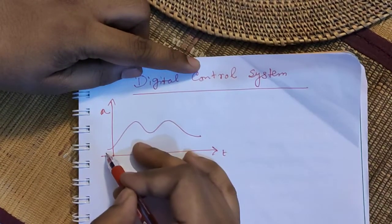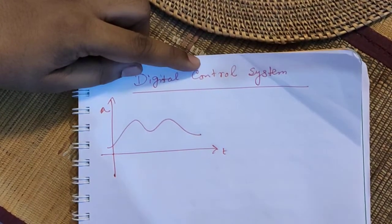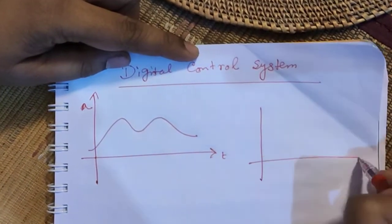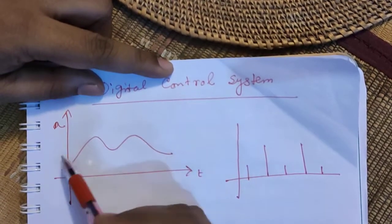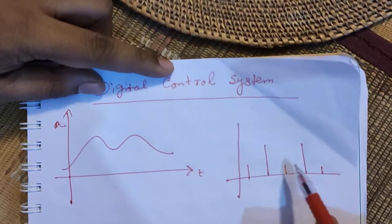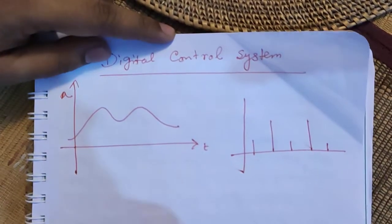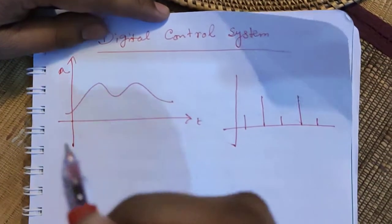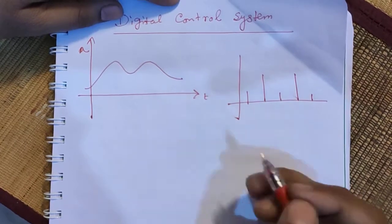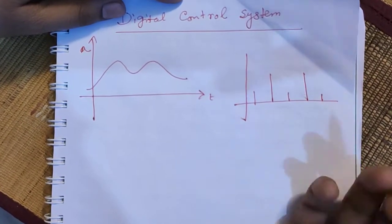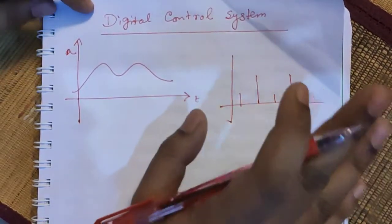But in a digital system, we won't have continuous data at every single point in time. Rather, we will have some discrete values of data, so we are missing out the data in between these values. The question is: what is a digital system and what is an analog system? I would like to ask you a question — ask yourself whether our world is always a continuous system.